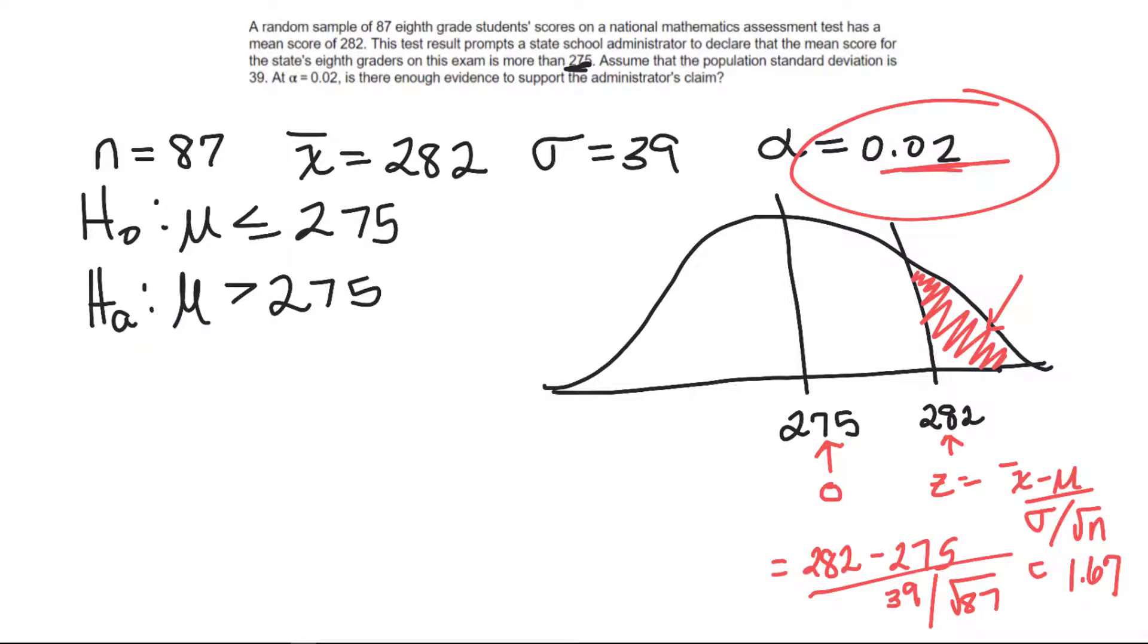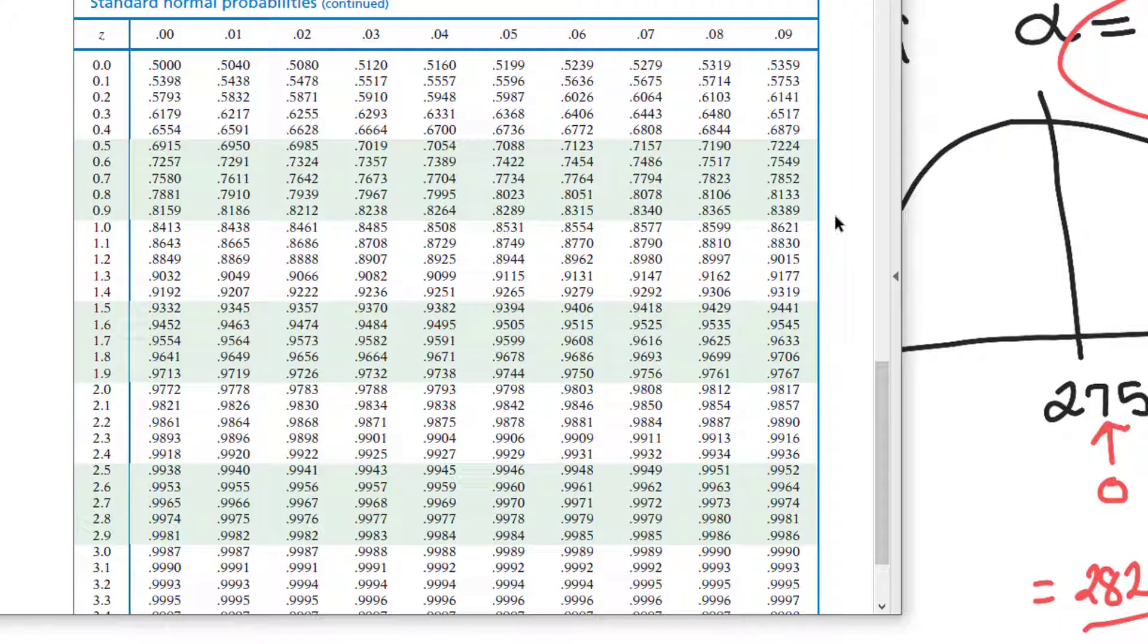And what table are you getting? The z-table. Why are you getting the z-table? Because we know the population standard deviation. And I find 1.67 and I get 0.9525.